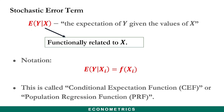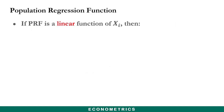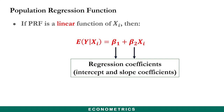This is usually called the conditional expectation function or population regression function. Now, if the population regression function is a linear function of x, then we can write an econometric model of this form: the expected value of y given x equals beta 1 plus beta 2 xi, in which case beta 1 and beta 2 are referred to as regression coefficients, representing the intercept and slope coefficients respectively.